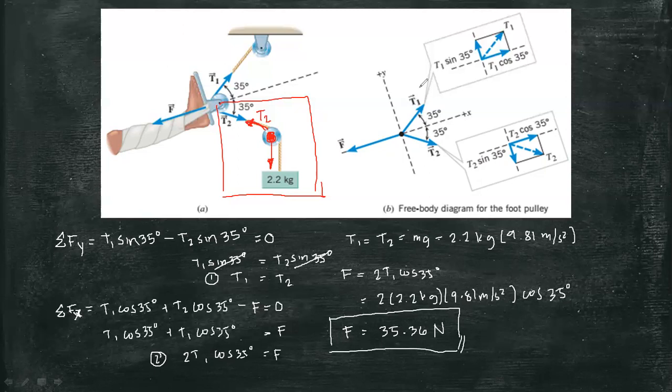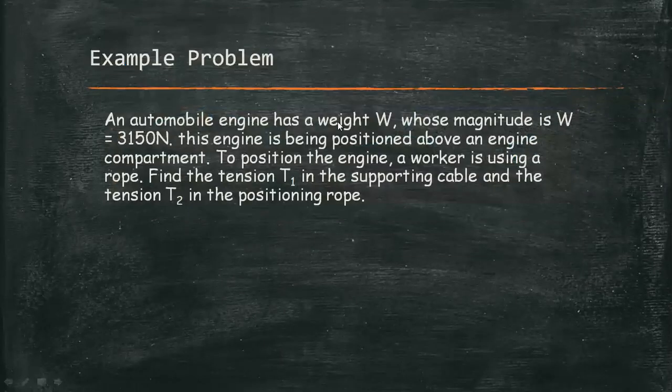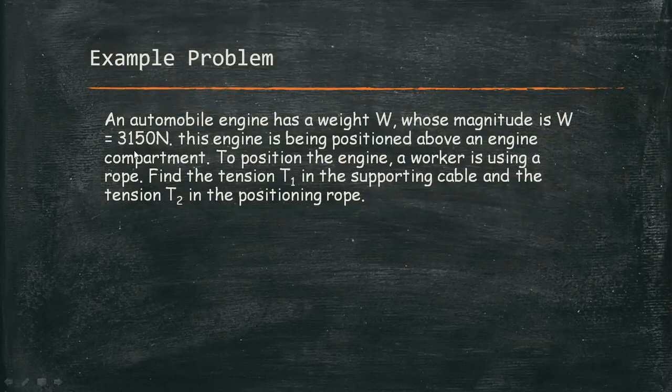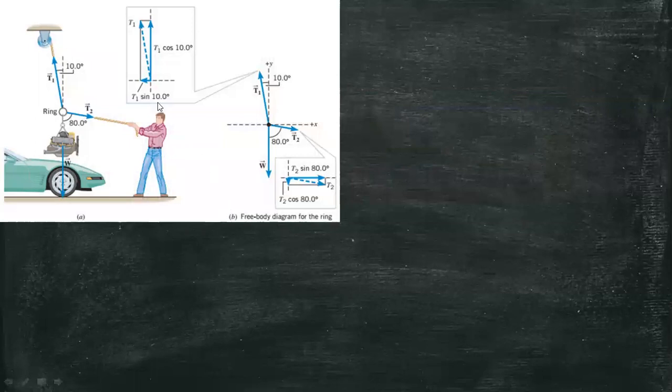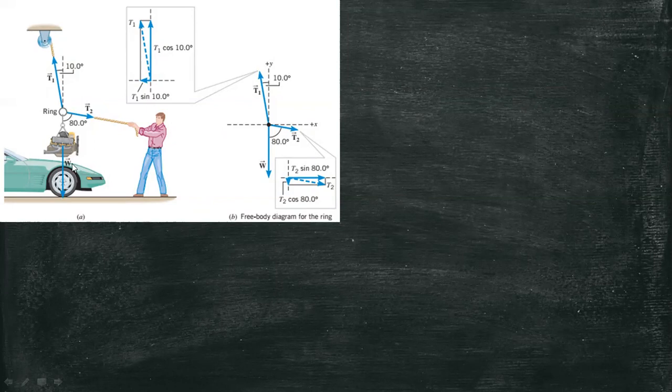Now let's have another example. An automobile engine has a weight W whose magnitude is 3150 newton. This engine is being positioned above an engine compartment. To position the engine, the worker is using a rope. Find the tension T1 in the supporting cable and tension T2 in the positioning rope. Here's our figure and the equivalent free-body diagram. We have T1 here and T2 and weight which is 3,150 newton.